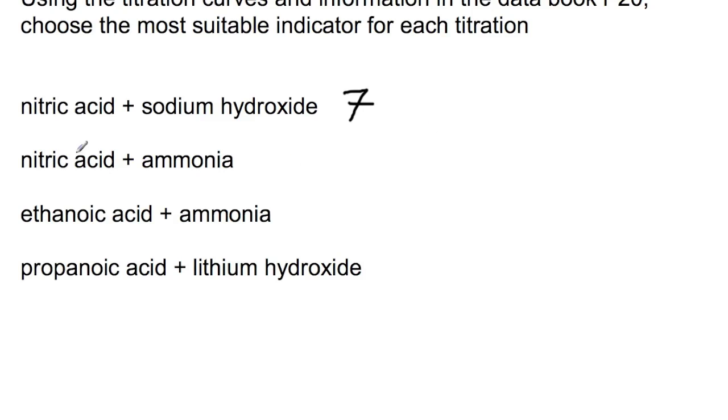If we use nitric acid and ammonia, we have a strong acid and a weak base. This means that our end point will be around about pH 5. If you look on page 20, there are again two suitable indicators, methyl red or litmus.